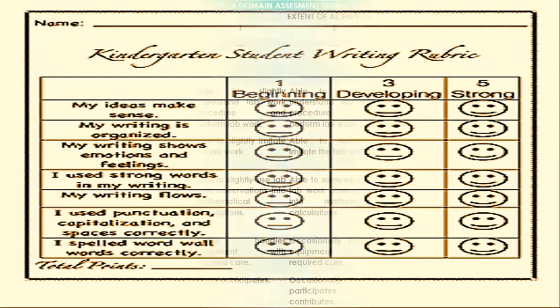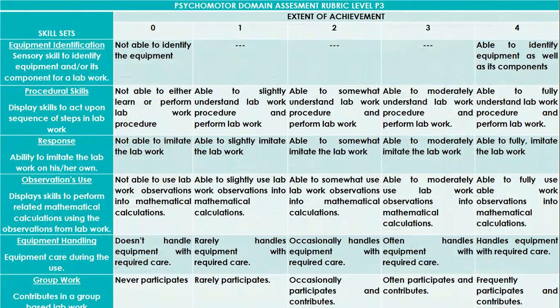Moving to our next level, you can see skill sets or criteria sets. This is the rubric for an engineering mechanics laboratory. For example, sensory skill to identify equipment or its components: if a student is unable to identify the equipment, they score zero. The highest level — able to identify equipment as well as its components — earns four marks. It is up to the teacher how much weight to assign.